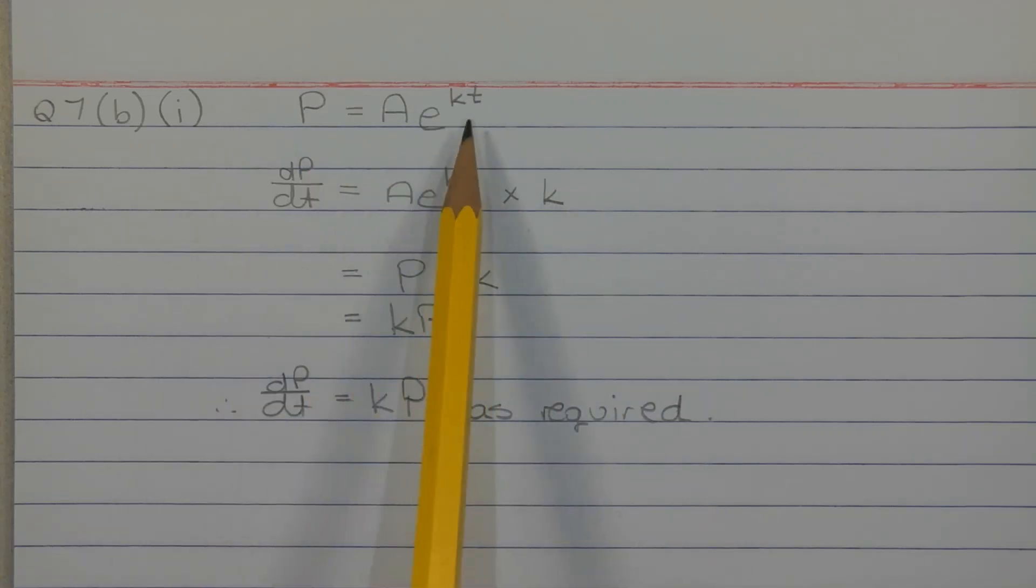So dP dt is equal to A times E to the power of KT times K. Now, if we go back to the original equation, AE to the power of KT is equal to P, so we replace this part of the expression with P. So dP dt is equal to P times K, which equals KP. Therefore, dP dt is equal to KP as required.